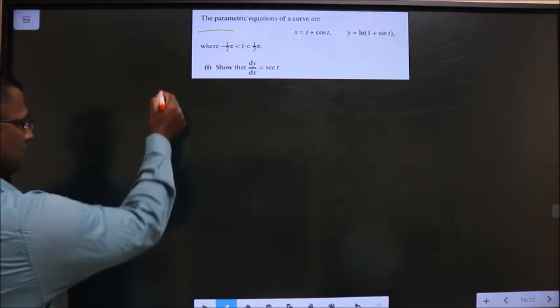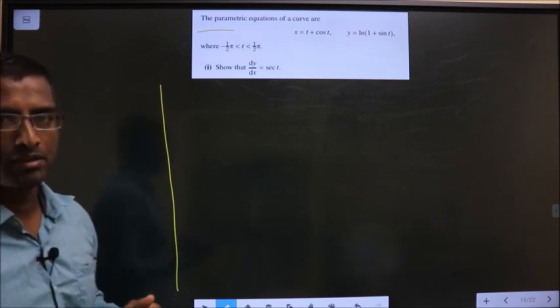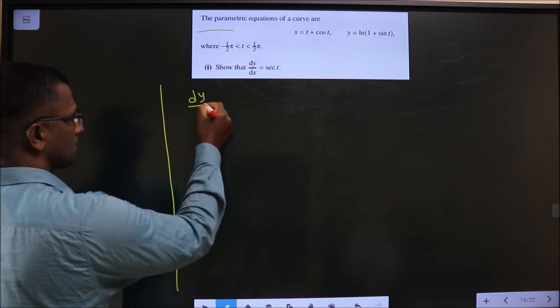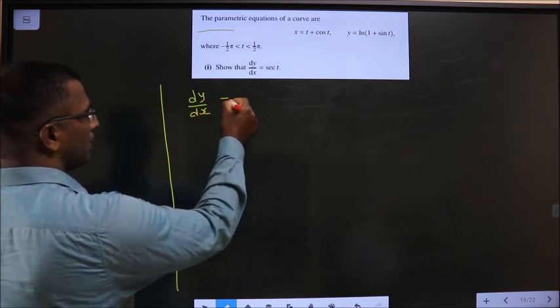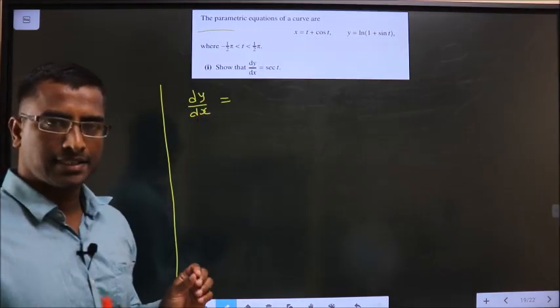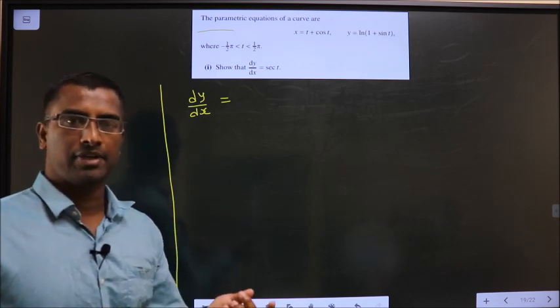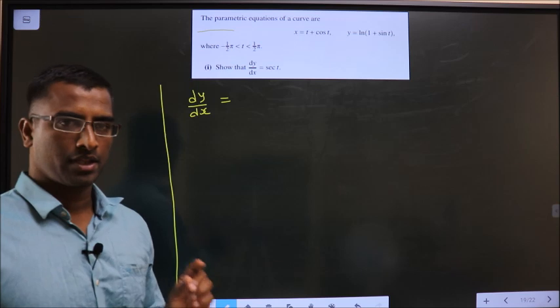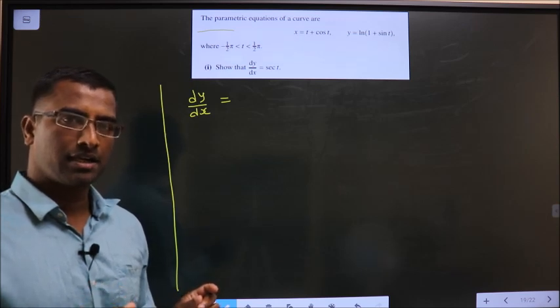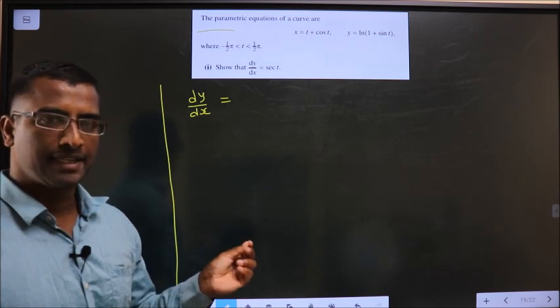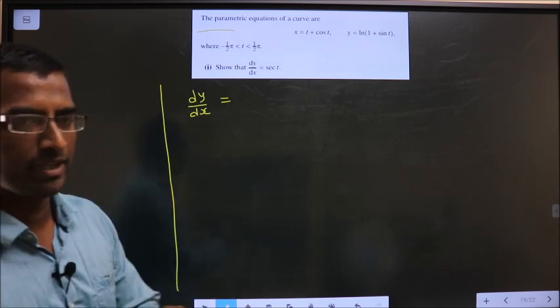See here. What you need to find? You need to find dy by dx. Here the change is x and y are present in terms of some other variable t. Clear? Whenever x and y are present in terms of some other variable, change dy by dx in this way.